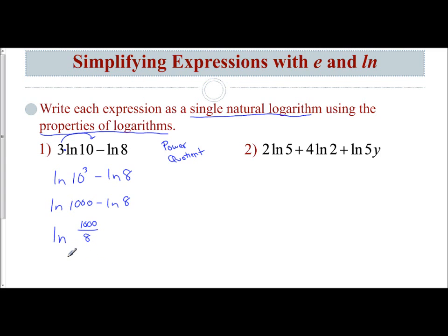If I take 1,000 and divide by 8, I get 125. So this simplifies to the natural log of 125. Our properties of logs still work because natural logs are logs with a base of e — we just use LN as shorthand. We can still apply our product, quotient, and power rules.